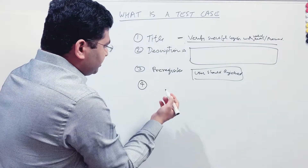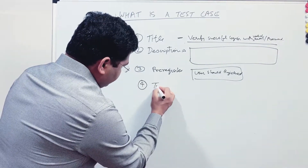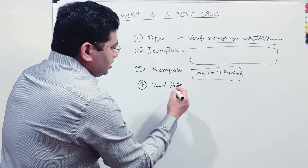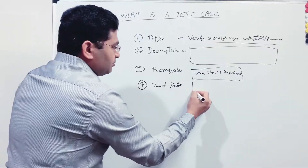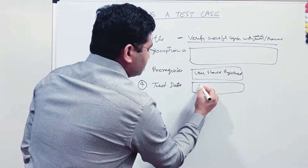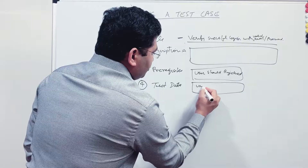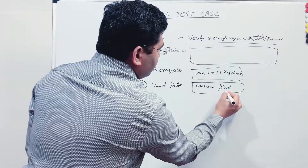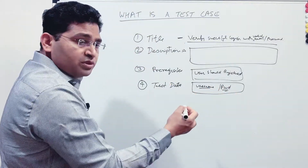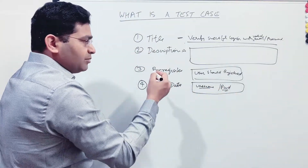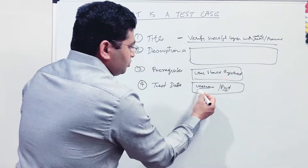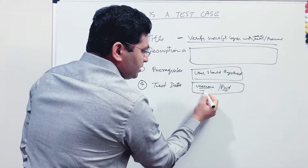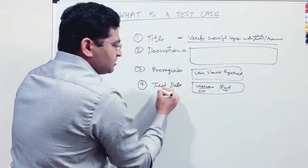The fourth important thing is about the test data. Is there any data requirement - test data? Usually, the test data in this particular case will be the username and password. Which username and password needs to be used when a person is going to execute this particular test case - so the valid username, valid email and password needs to be provided in this particular test case as test data. That is the fourth piece of information that needs to go within the test case.